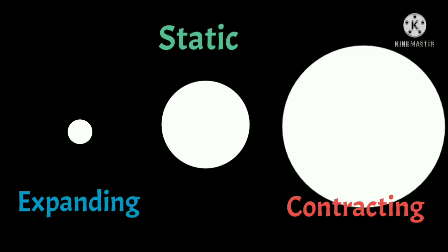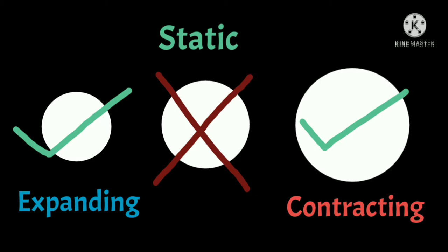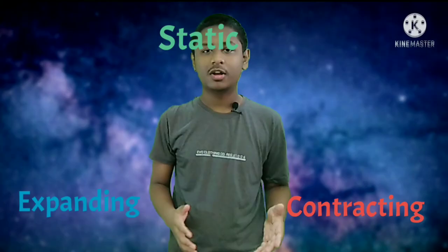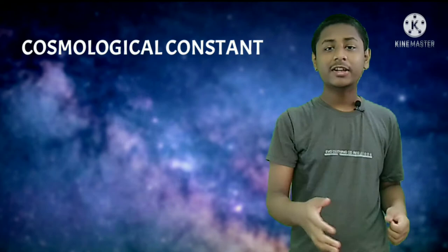But Einstein was sure that the universe must be static, so he included another term in the equations of general relativity that allowed the universe to be static. This is known as the cosmological constant. Later in the next decade, Alexander Friedmann correctly found the solution of general relativity that implied the universe must be either expanding, contracting, or static.